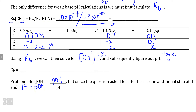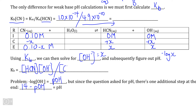The first thing we need to do is construct our Kb expression, which is going to be the concentration of our products — hydrogen cyanide times the concentration of hydroxide — divided by the concentration of our reactants, which is the concentration of the cyanide ion. As we've already established, this is equal to our Kb value.